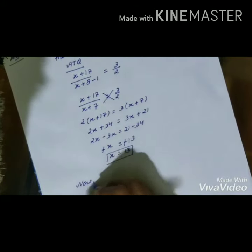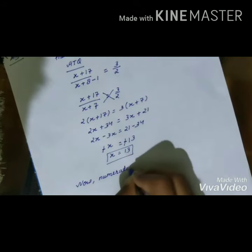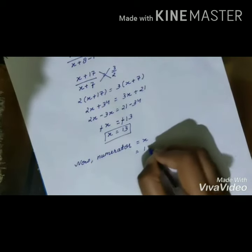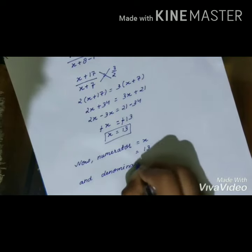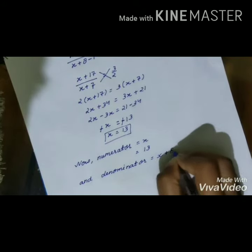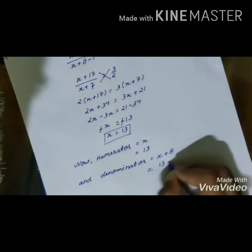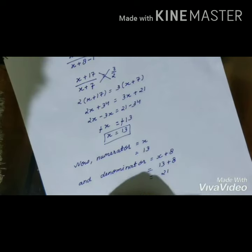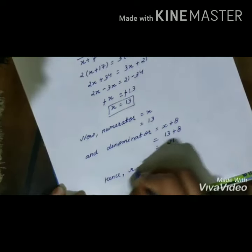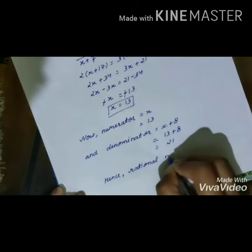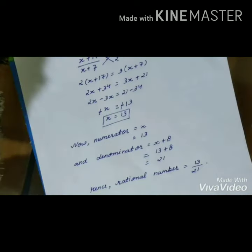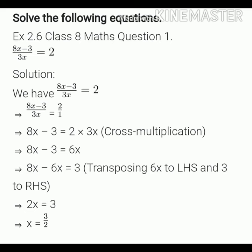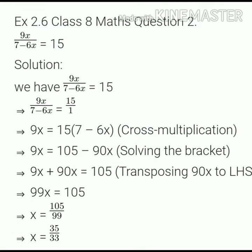Now, numerator = x = 13. After putting the value of x, the numerator is 13. And denominator = x + 8 = 13 + 8 = 21. Hence, the rational number is 13/21. I hope you must have understood this exercise well. After this exercise, our chapter is completed. Thank you.